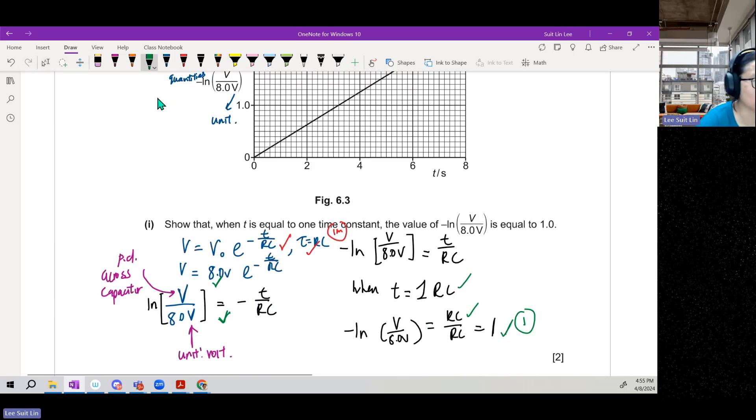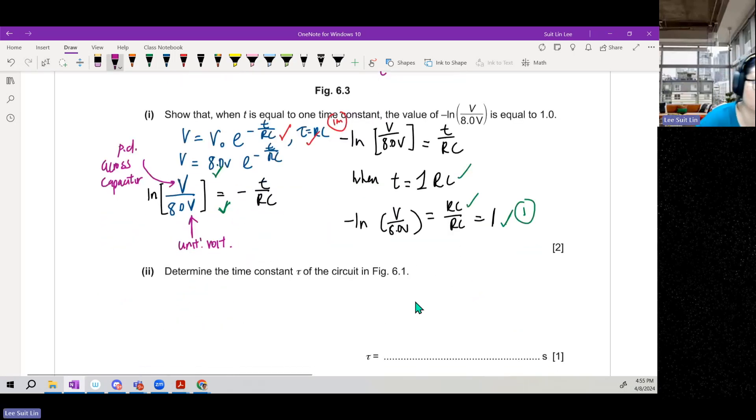This one looks like 3.2. This is equal to time constant. Oh, I'm glad you asked. Time constant is equal to 3.2 seconds when ln V over 8.0 V is 1. If you can't do the first part, you can still read. Just take it as a given.